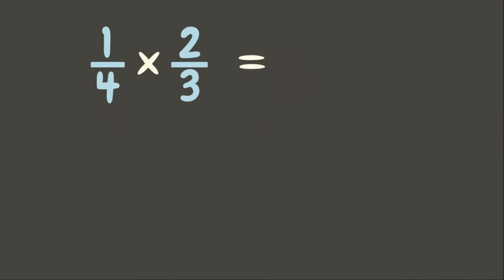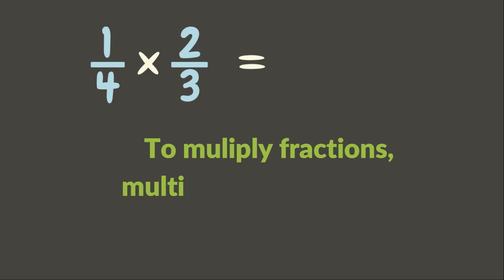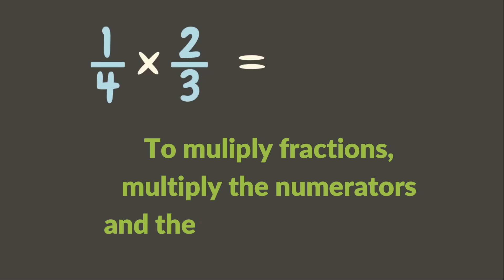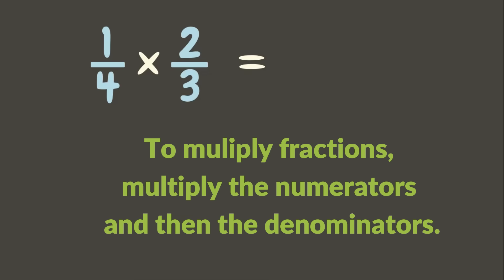Let us try this first example: 1 fourth times 2 thirds. In multiplying fractions, it's very easy. You just need to simply multiply the numerators and denominators.